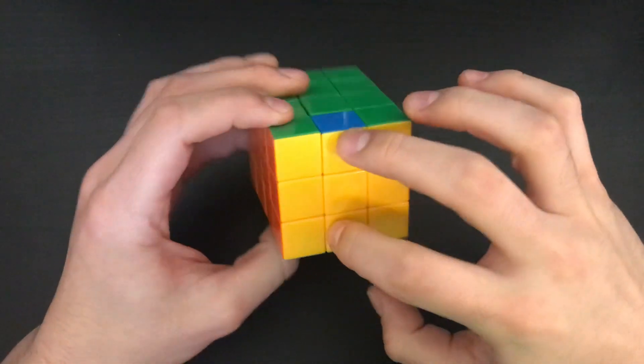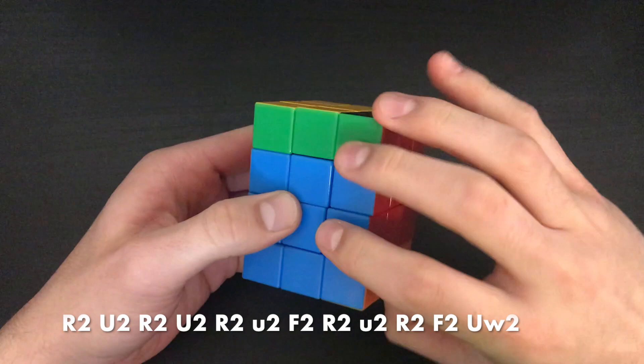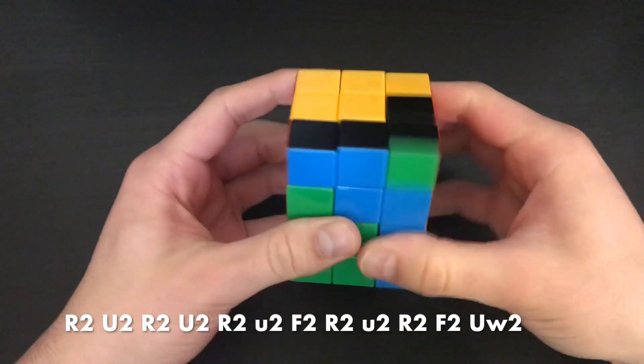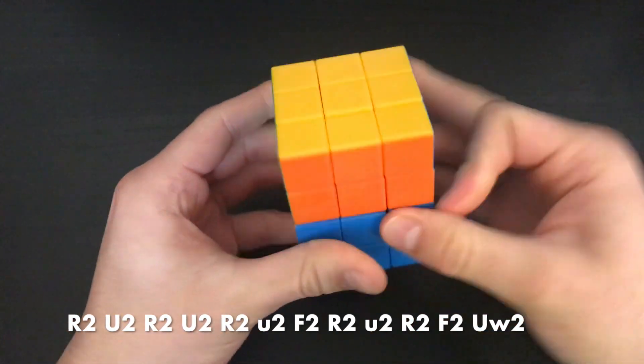And lastly, if two edges are swapped, you can use this alg: R2u2, R2u2, R2, little u2, F2, R2, little u2, R2, F2, Uy2.